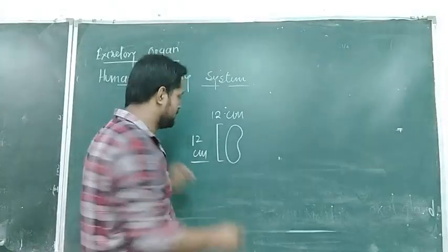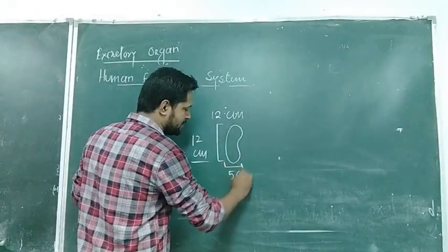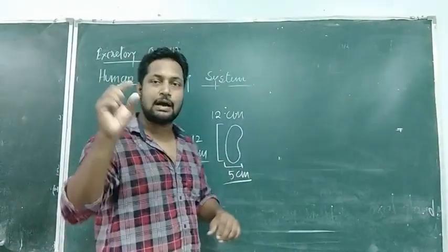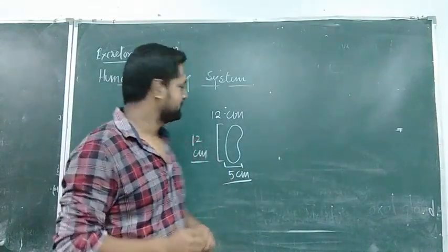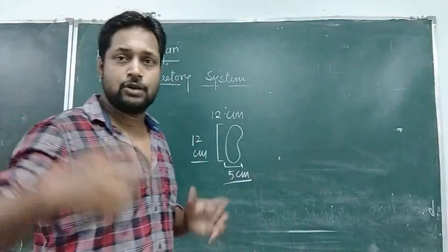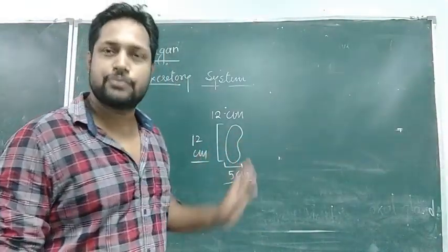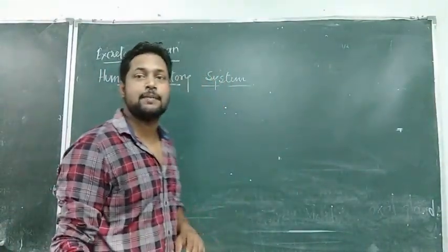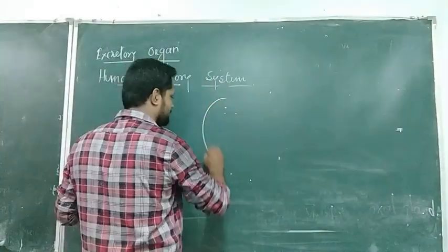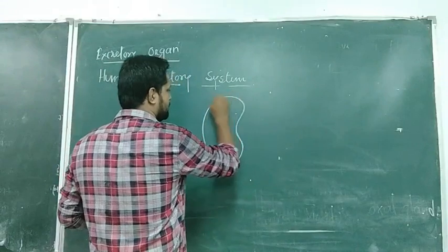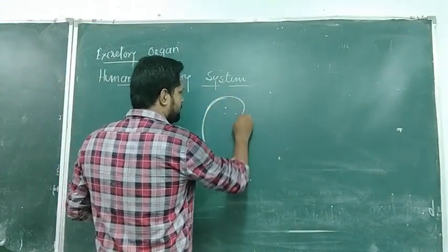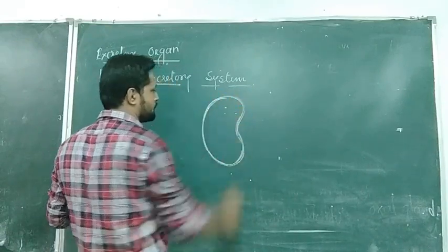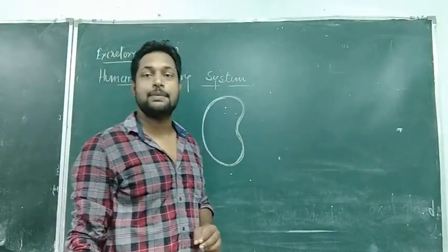The width of the kidney is 5 cm. The thickness is also approximately 5 cm. The kidney has a bean shape, also described as a bin shape.